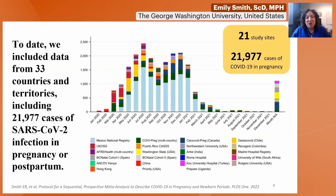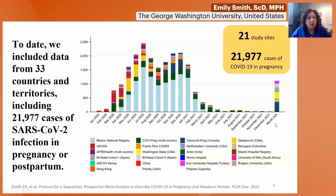What I'll show you today, which has now been published, includes data from 33 countries and territories, covering about 22,000 cases of SARS-CoV-2 infection in pregnancy, with data from January 2020 through December 2021. We also have newer Omicron data that I'll show towards the end.